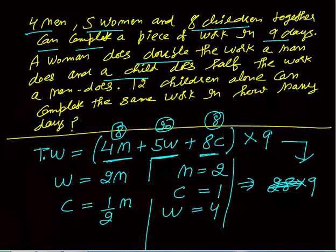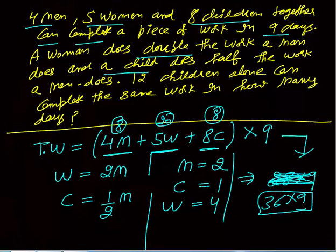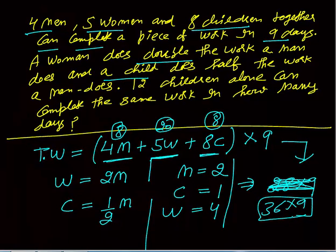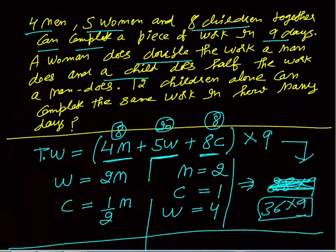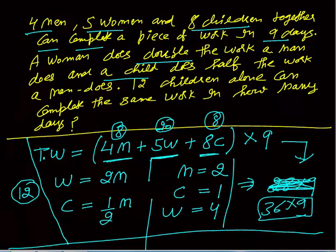Now, twelve children one day work: one child does one unit of work, so twelve children do twelve units per day. To complete thirty-six into nine units of work, number of days equals thirty-six into nine divided by twelve. Twelve into three equals thirty-six, so the answer is twenty-seven days.